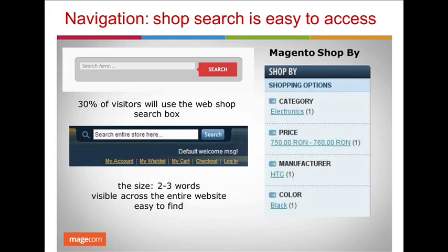The search box size should generally be able to include 2–3 words or 12–15 characters, so that users can see the whole product name while entering it. Usability experts do not suggest using advanced search because of its complicated structure, but Magento provides an advanced product filtering system where users can filter items by color, price, and type — which is a perfect alternative.